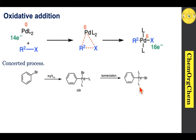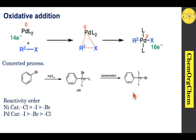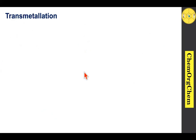Regarding reactivity order for oxidative addition in Kumada coupling: with nickel catalysis, organochlorides are highly reactive compared to either iodo or bromo compounds. With palladium catalysis, iodo compounds are highly reactive compared to bromo as well as organochloride compounds.